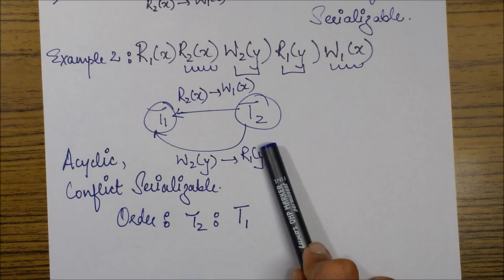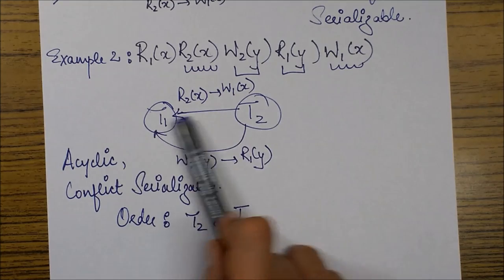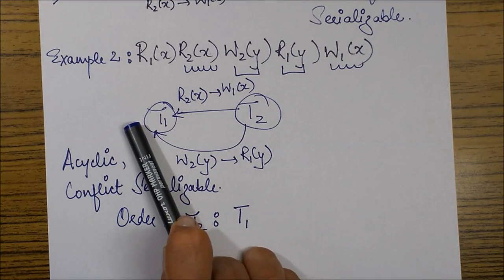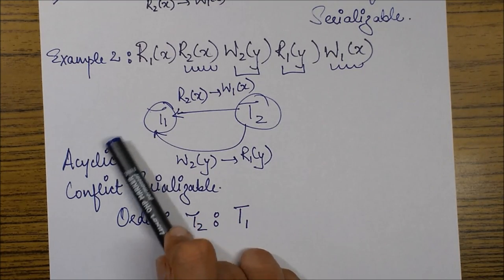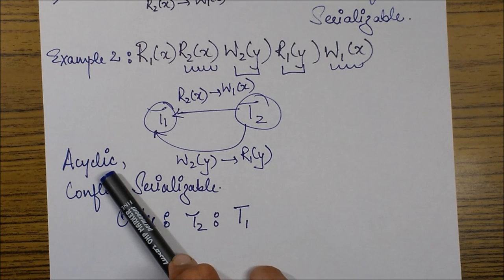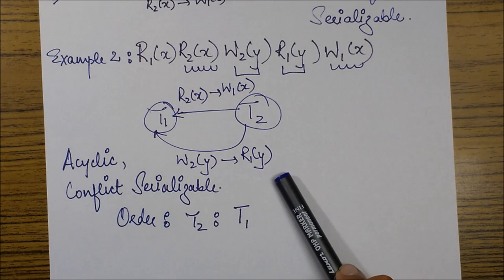But in this case now the graph is acyclic. There is no loop being formed. Both the things are going from 2 to 1. So that means this is an acyclic graph. If this is an acyclic graph then the schedule is conflict serializable.